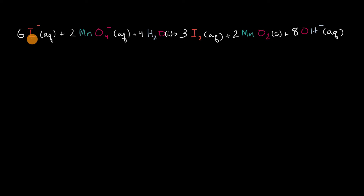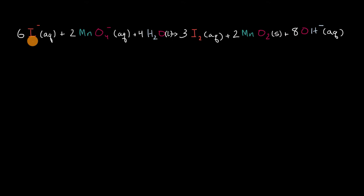First, let's look at this iodine right over here. Each iodine has a negative one charge, and so its hypothetical charge — which isn't so hypothetical in this case — which would be its oxidation number, is negative one.